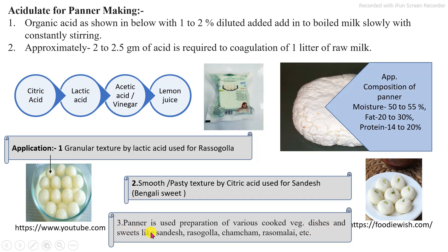Specifically, depending on the application of the paneer and the use of acidulant, the acidulant affects the final texture and property of the paneer. As per the native application, we can use the specific organic acid for the paneer production.